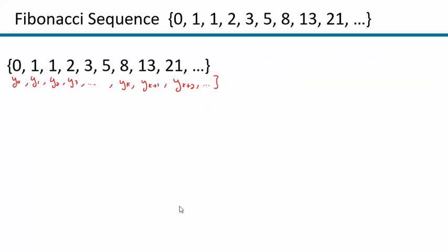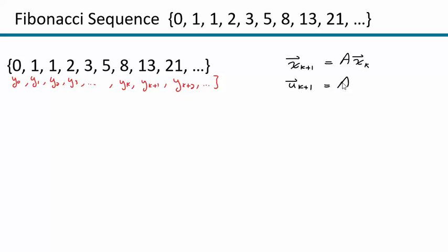So now what we want to do is make a difference equation. Remember, a difference equation is a situation where x sub k plus 1 can be found by taking a matrix A and multiplying it by x sub k. For us, this is going to be: u sub k plus 1 is found by taking some matrix A and multiplying it by u sub k.